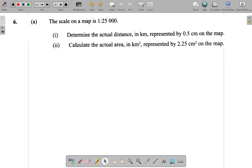Let's look at question 6a. It says the scale on a map is 1 to 25,000. You must determine the actual distance in kilometres represented by 0.5 centimetres on the map.